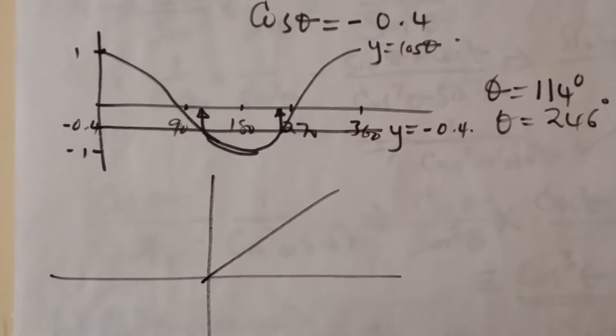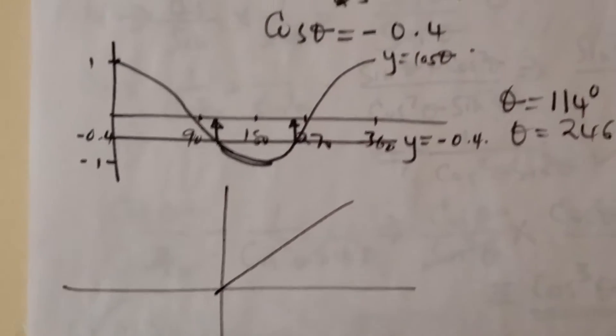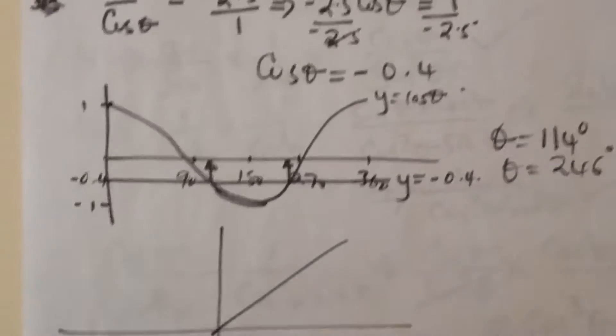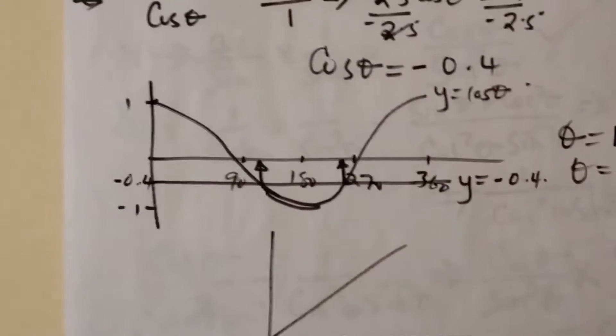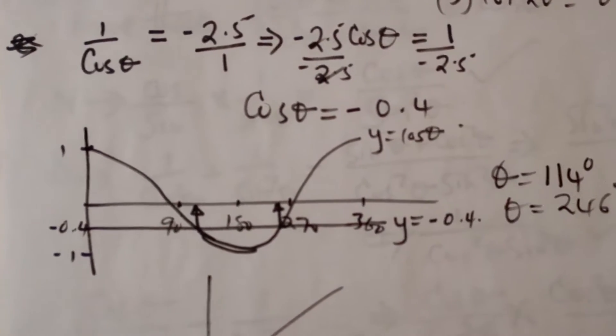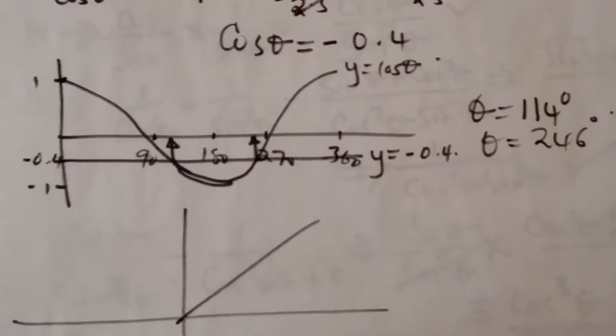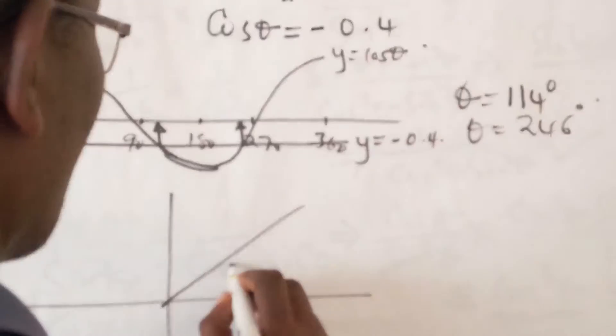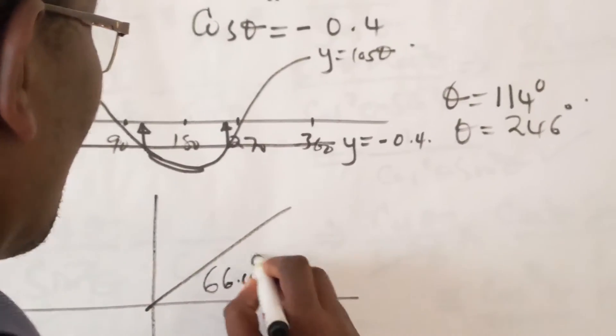What is the cosine of 36 degrees? The cosine of 36 degrees, 0.4 equals, shift cosine answer, we get 66.4 degrees. So we are going to have 66.4 degrees.